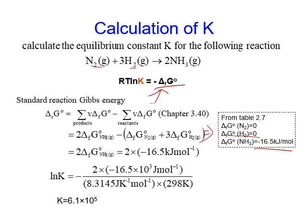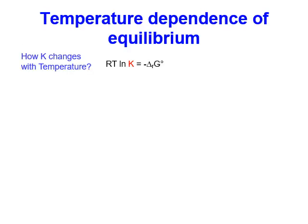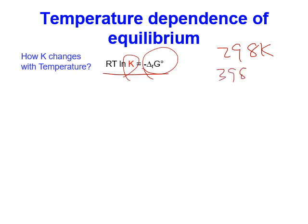The result is K = 6.1 × 10^5 — a very large number, meaning the reaction is almost complete at room temperature. Later we will show that increasing temperature decreases K. But the formation Gibbs energy table is listed at 298 K, so how do we calculate the equilibrium constant at a different temperature, such as 398 K? We are going to derive an equation to calculate K at a different temperature.